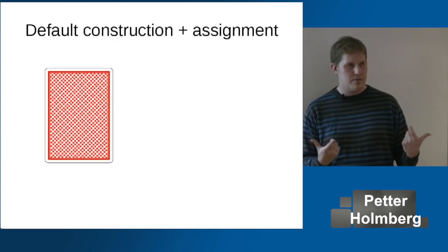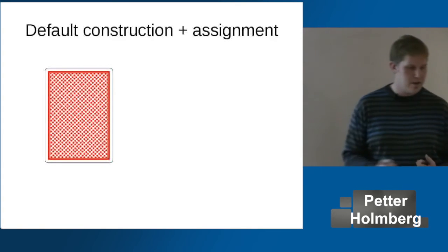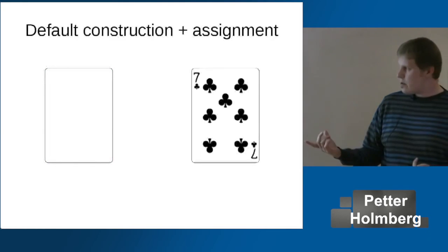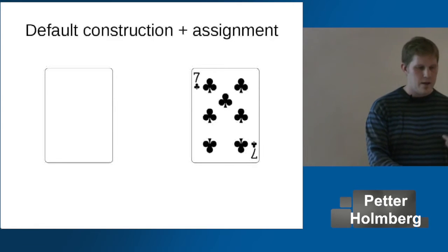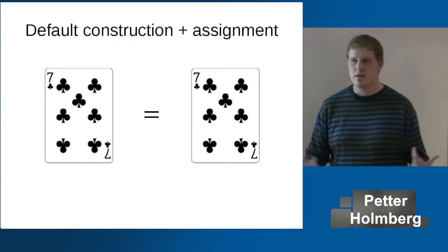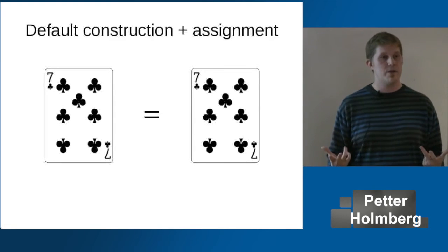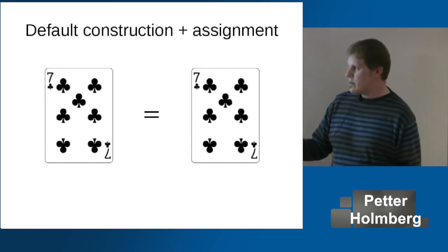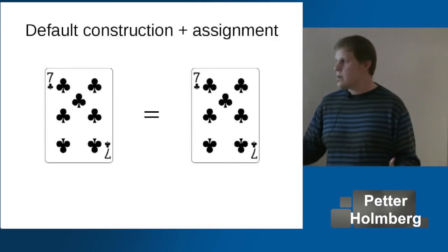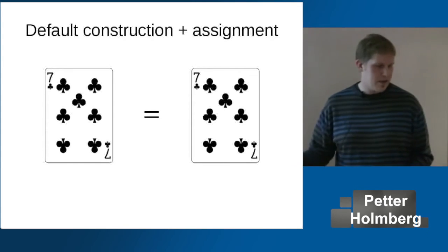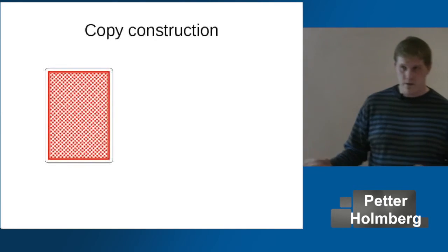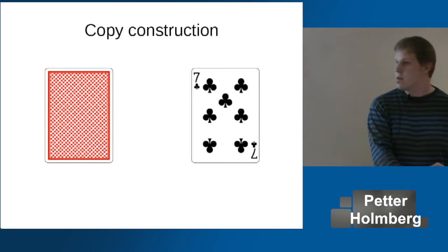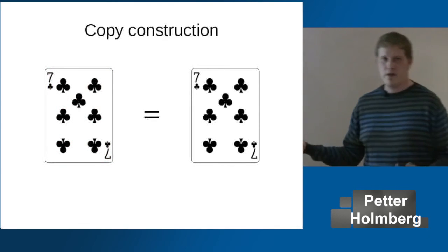So we have default construction and we have copy assignment — now we can combine them. We take some raw memory, default construct an object there, take another object and copy assign it, and we get two equal objects. Now not only can we turn objects into copies, we can create brand new copies. But of course there is a second way of doing this in C++ — conceptually or semantically the same, but potentially faster. We could have a copy constructor: take some raw memory, another object, copy construct it in place, and we get the same end result.